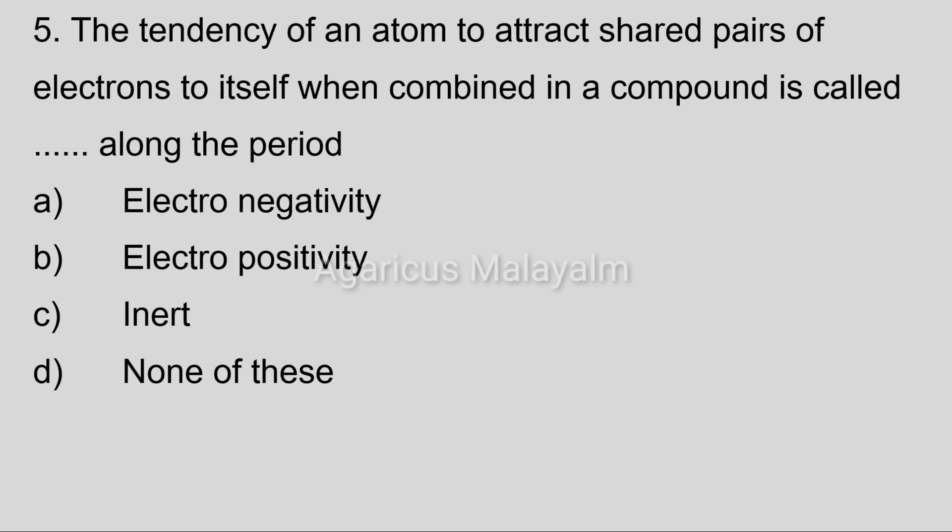Fifth question: the tendency of an atom to attract shared pairs of electrons to itself when combined in a compound is called — and it increases along the period. Option A: electronegativity. Option B: electropositivity. Option C: inert. Option D: none of these.